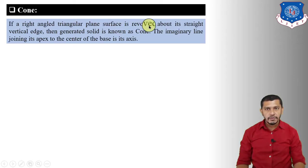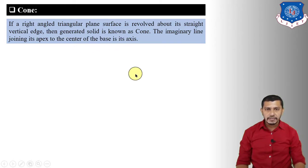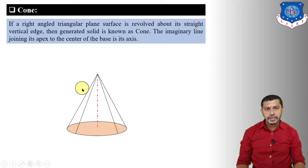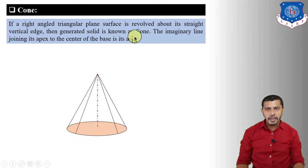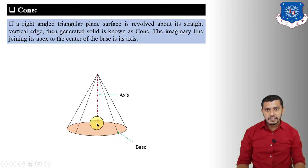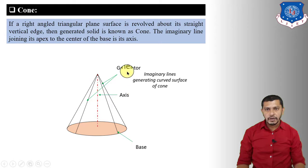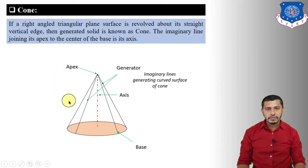A cone is generated when a right-angled triangular plane surface is revolved about its straight vertical edge. The imaginary line joining its apex to the center of the base is the axis. Its dimensional parameters include the base, the axis, generators — imaginary lines generating the curved surface — and the apex point.